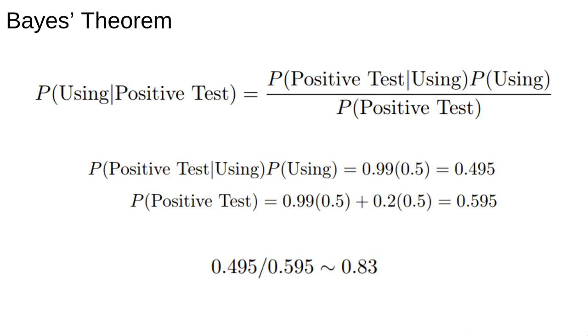According to this analysis, we should now be 83% sure that our athlete is taking drugs in light of the positive test, updating our prior belief of 50%. Because this test has a 20% false positive rate, the probability is not raised to 100%. Bayes' theorem shows how to use new information, in this case a positive test, to calculate how much more confident we should be in our beliefs.